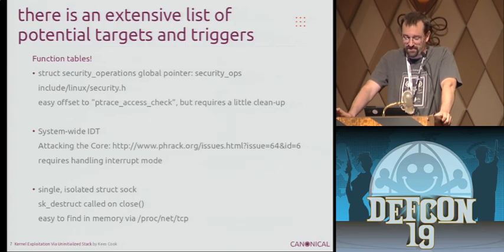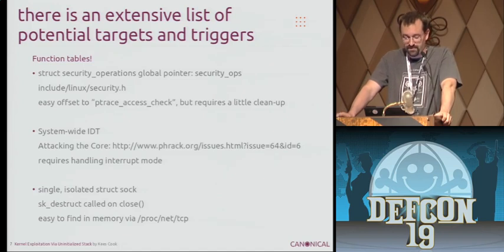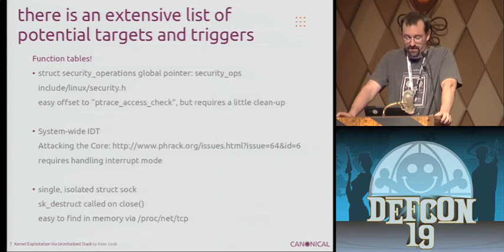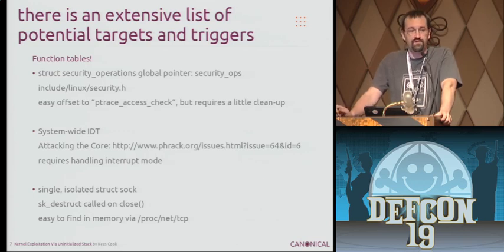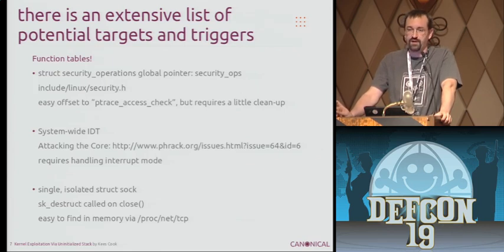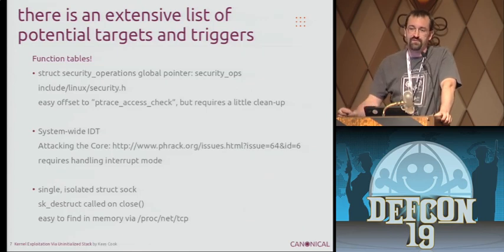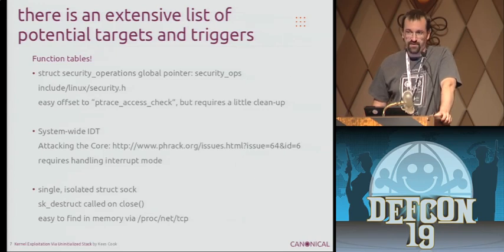I like replacing the ptrace access check because it was at the top and didn't require too much cleanup after you used it. You could also use the IDT — there's a good Phrack article on that. But my favorite at this point is using a single sock struct. If you can create a socket, you've got the destructor that gets called when the socket goes away. If you overwrite that function, when you close the specific socket it'll actually run the code you wanted. And it's very easy to find that function because it's exported by the kernel.